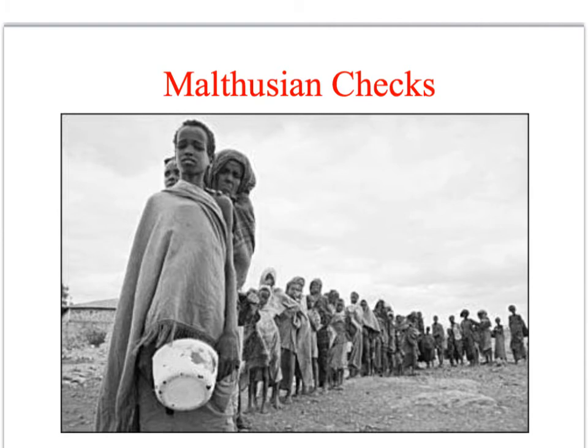He believed that famines, diseases, and wars over food and land — known as Malthusian checks — would function to bring population size back down to more sustainable levels.